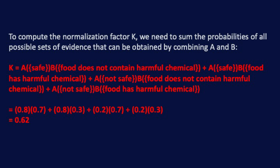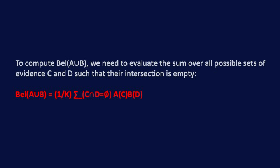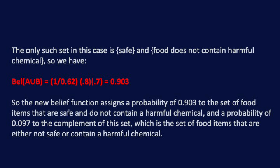To compute the normalization factor K, we need to sum the probabilities of all possible sets of evidence that can be obtained by combining A and B. To compute the combined belief function, we evaluate the sum over all possible sets of evidence C and D such that their intersection is empty. The only such set in this case is "safe" and "food does not contain harmful chemical." So the new belief function assigns a probability of 0.903 to the set of food items that are safe and do not contain a harmful chemical, and a probability of 0.097 to the complement of this set, which is the set of food items that are either not safe or contain a harmful chemical.